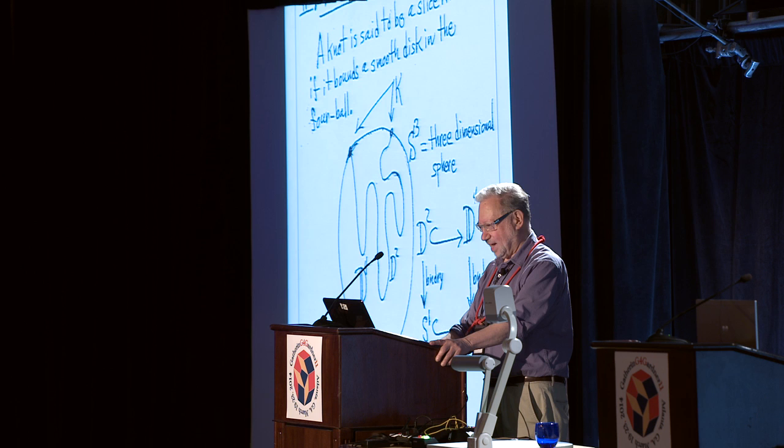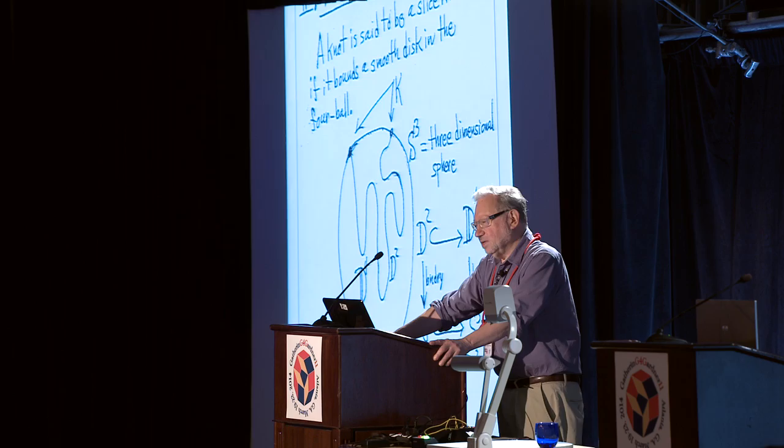The problem I'm interested in is slice knots, and this is where we get to the fourth dimension and the Martin Gardner story. A knot is said to be slice if it bounds a smooth disk in the four-ball. That means we're thinking of three-dimensional space as the boundary of four-dimensional space, and the knot may bound something simple in four-dimensional space even though it doesn't bound anything simple in three-dimensional space.